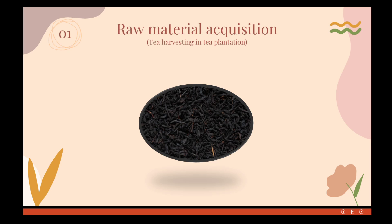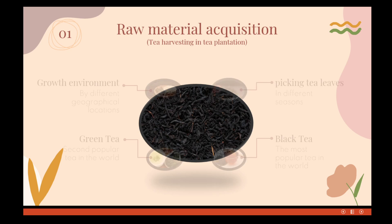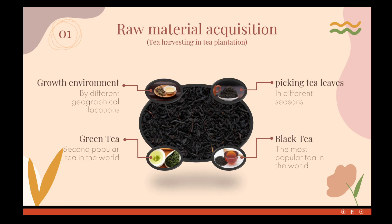The first stage is raw material acquisition. There are many types of teas, such as black tea, green tea, white tea, and oolong tea. Tea plantations are located in different geographic locations according to the suitable growing environment of the different teas. Proper raw materials are obtained by picking tea leaves and screening.